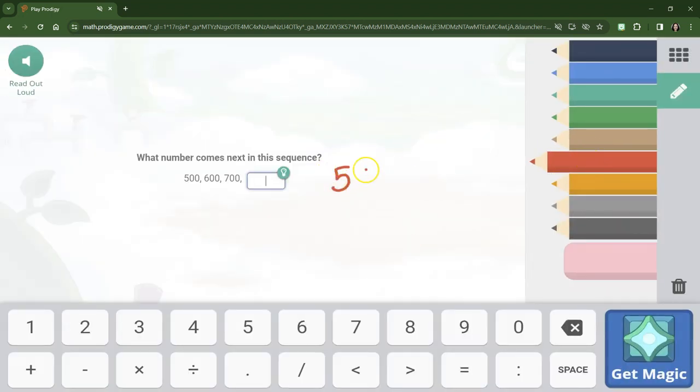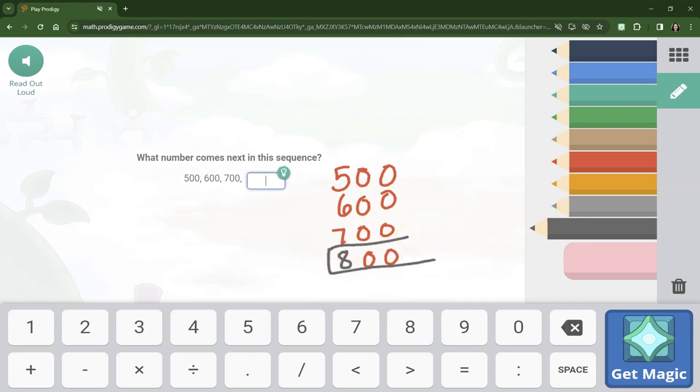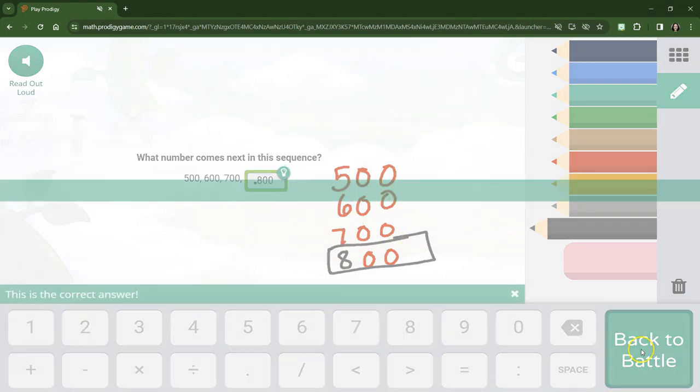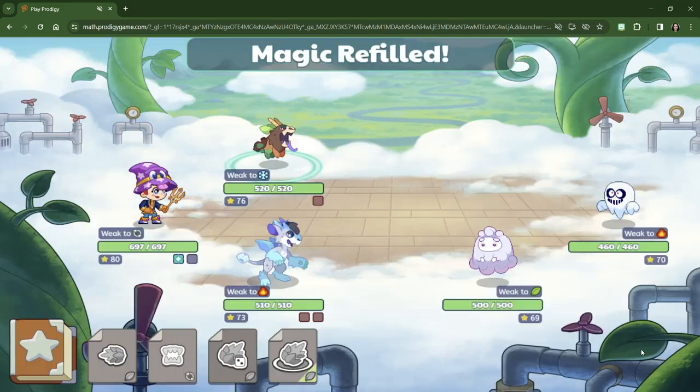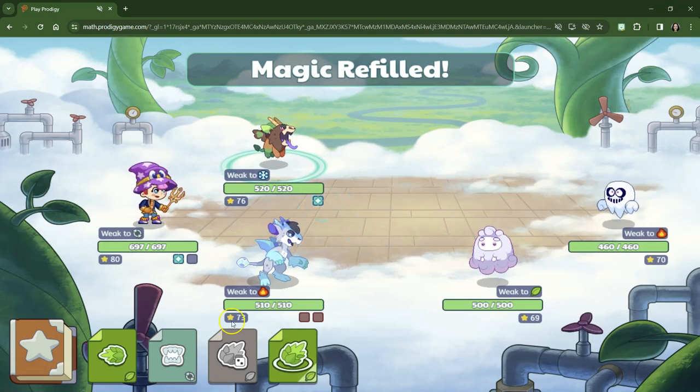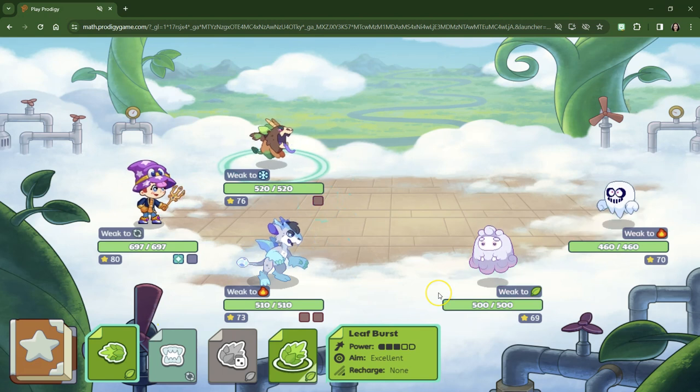Now we're counting up not by tens. Do you see what we're counting up by? That's right. We're counting up by hundreds. So our number is 500, 600, 700, not 8,000, 800.